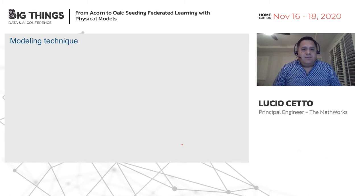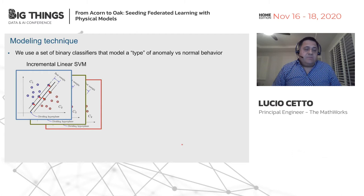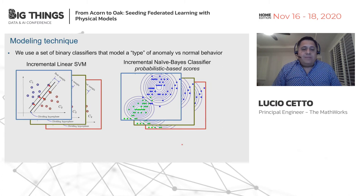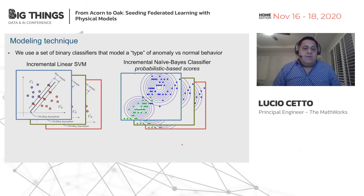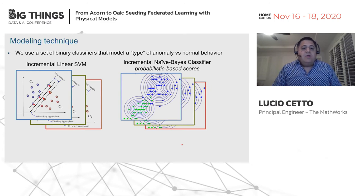Now let's go to the modeling technique. To model the anomalies, we use a set of binary classifiers that model a given type of anomaly versus the normal behavior. We experimented with incremental linear support vector machines and incremental naive Bayes classifiers. SVMs use a stochastic gradient descent algorithm to update the model starting from a random hyperplane. Naive Bayes classifiers update the summary statistics representing an independent normal distribution. We found support vector machines to be more accurate for this type of problem. Recall that not all anomalies might be sufficiently represented at every node, so we only train those binary learners at every fan for which we have enough evidence.